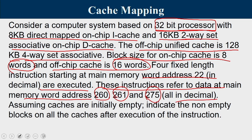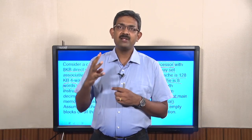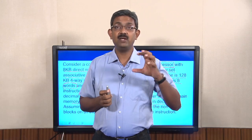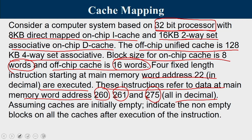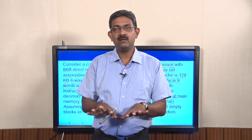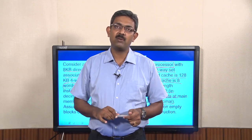With caches initially empty, we must identify non-empty blocks in all caches after execution. The 32-bit processor has a word length of 4 bytes. Instructions at word addresses 22–25 travel from main memory → L2 → L1 I-cache. Data at addresses 260, 261, 275 travel from main memory → L2 → L1 D-cache. We need to determine which sets get filled in each cache.